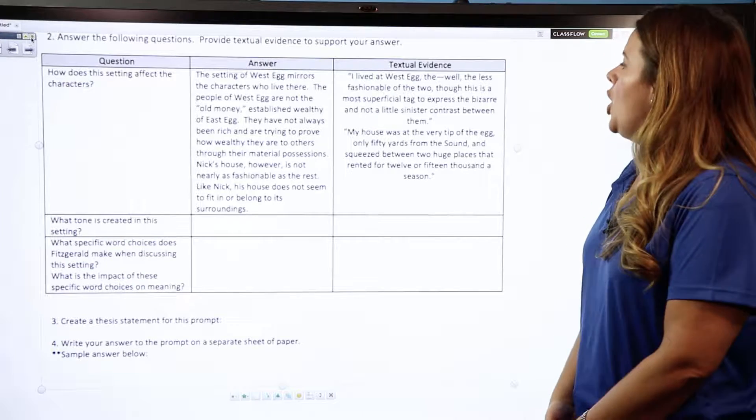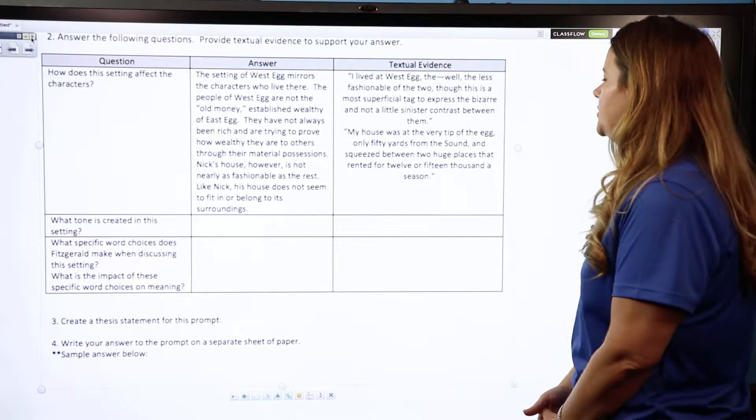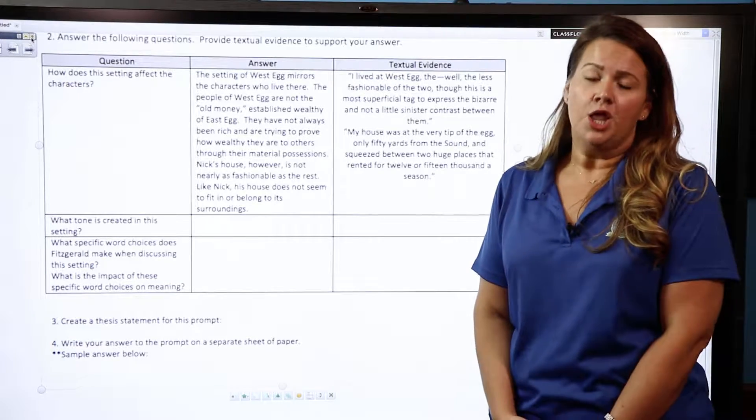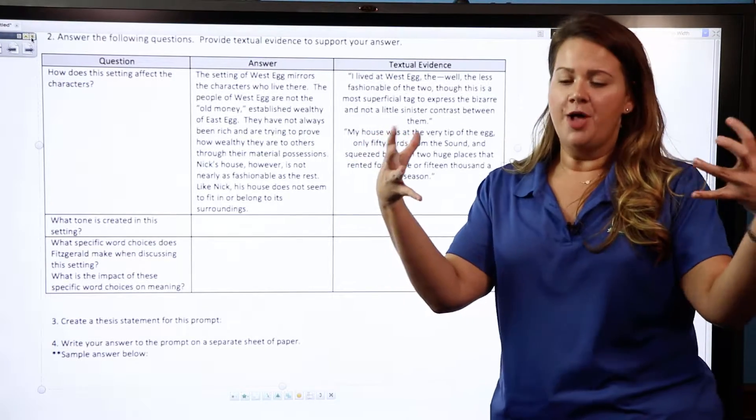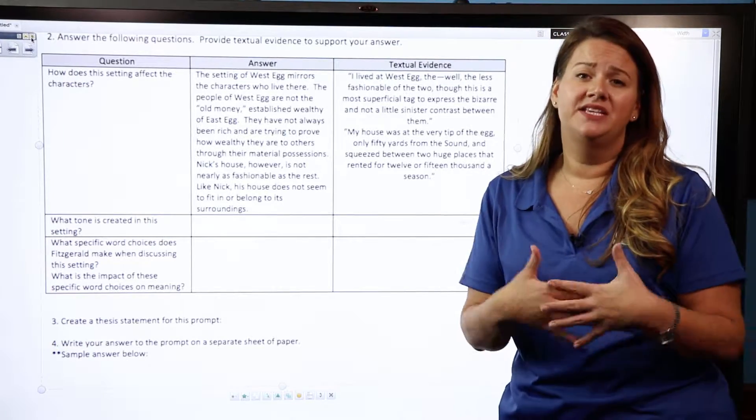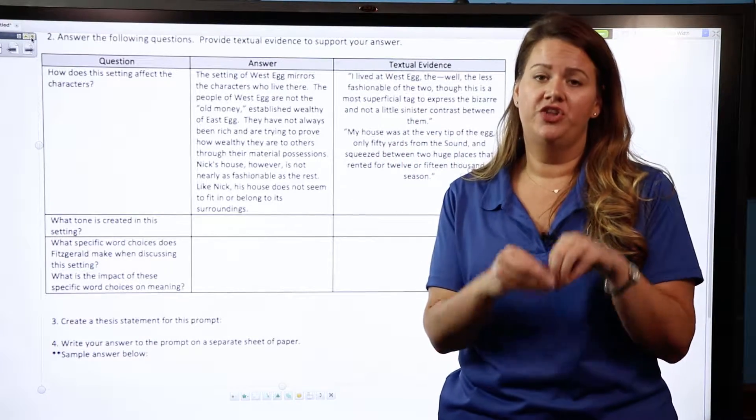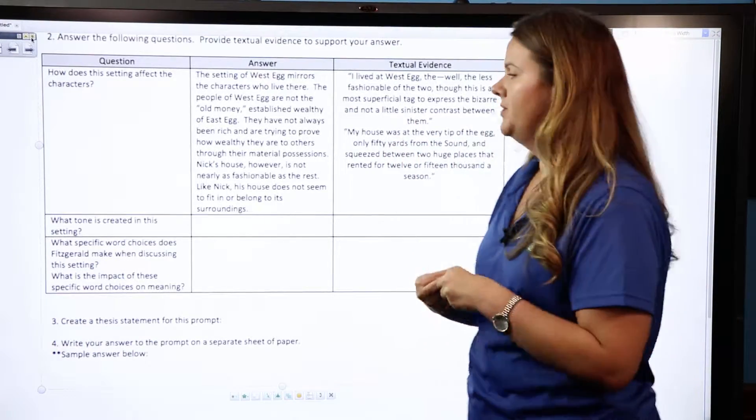Then I pulled in another quote where he says, 'My house was at the very tip of the egg, only 50 yards from the sound, and squeezed between two huge places that rented for 12 or 15,000 a season.' So reiterating how Nick feels that his home is so much smaller and modest than those around him. Those quotes are both very specific to the location that I'm going to write about, to the setting I'm going to write about.